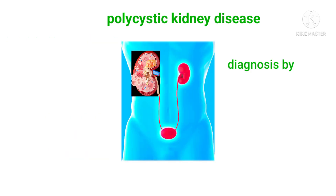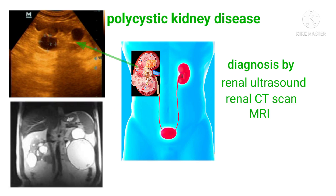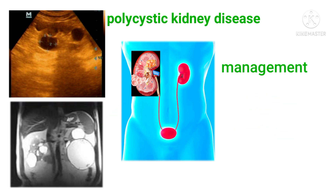Diagnosis is usually made by renal ultrasound, renal CT scan, MRI, and renal biopsy. There is no specific management for polycystic kidney disease. Tolvaptan is a recently developed FDA-approved drug that is considered to inhibit cyst formation and slow the progression of the disease.